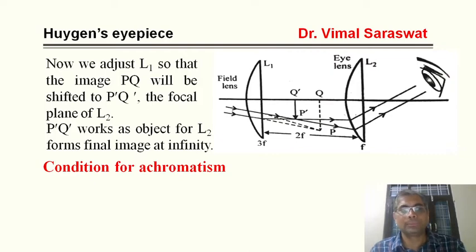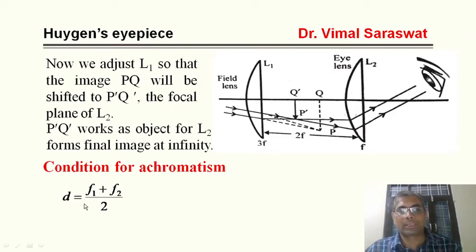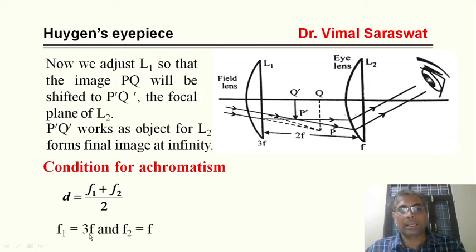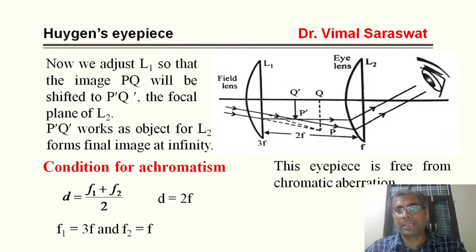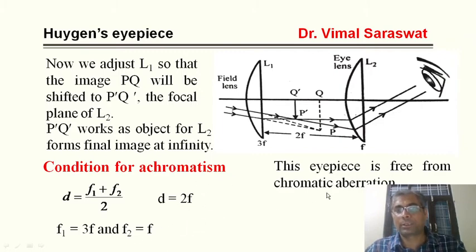Now, the condition for achromatism: d = (F1 + F2) / 2. Since F1 = 3f and F2 = f, we get d = (3f + f) / 2 = 2f. The distance between the field lens and the eye lens is 2f, which means the image will be free from chromatic aberration. This eyepiece is therefore free from chromatic aberration.